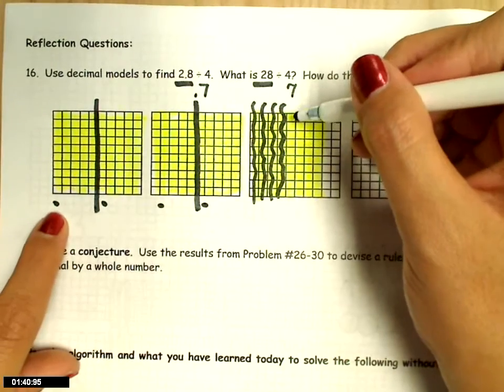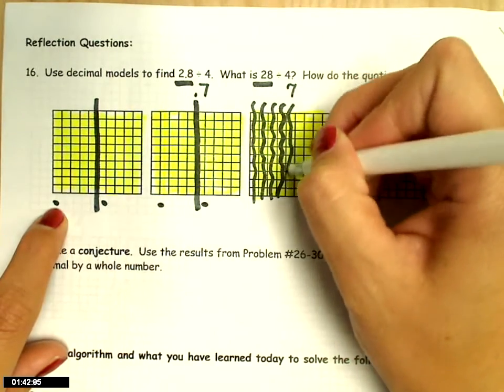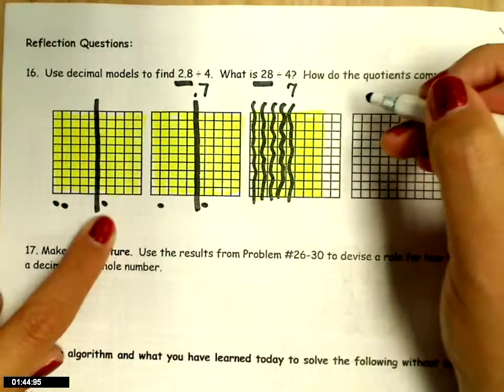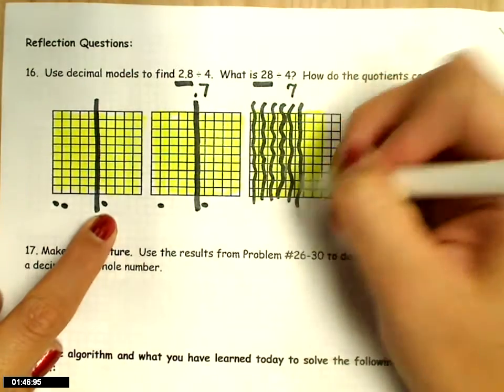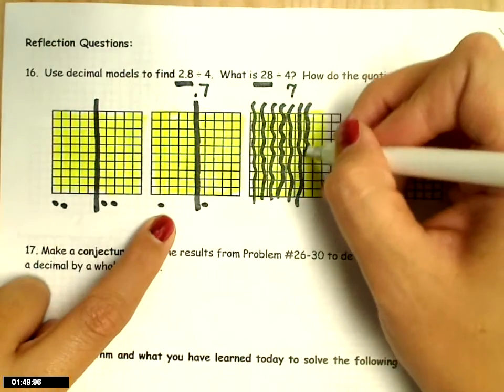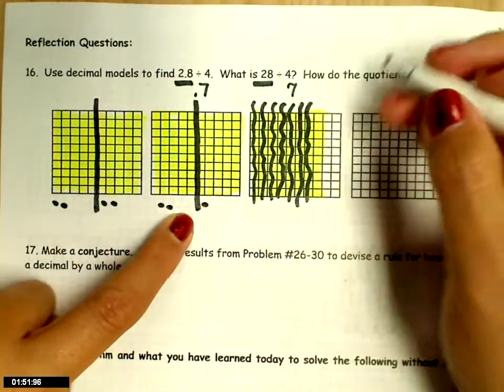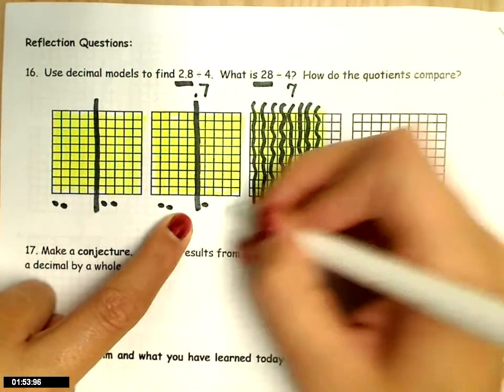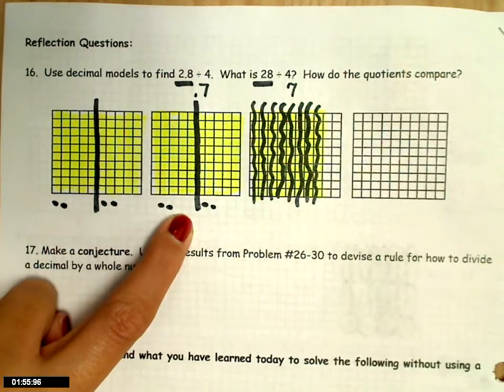So I do have 4 complete groups. 1, 2, 3, and 4. But what I'm going to do is I'll count these 5, and then I need to count these 2, which makes it a total of 7 tenths in each group. And that's my answer.